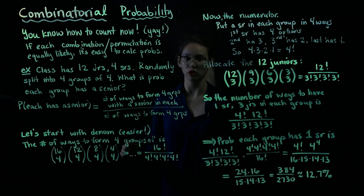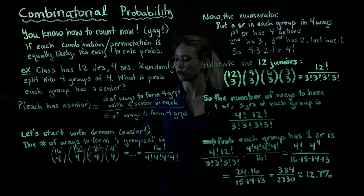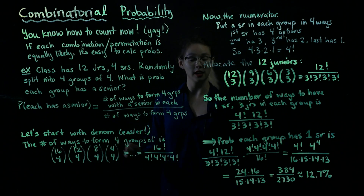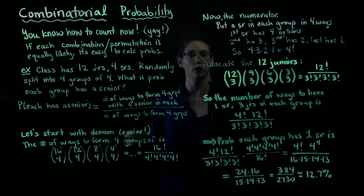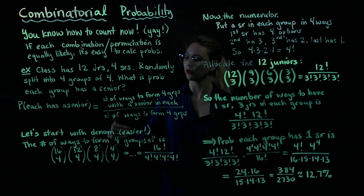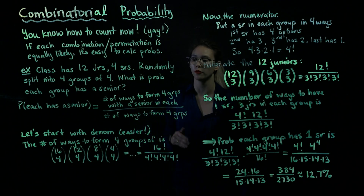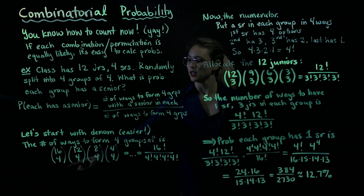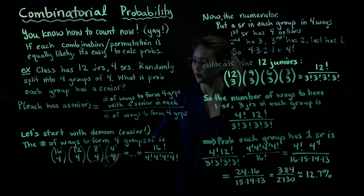When we get to the next group, there are 12 students left and we're choosing four of them, so we have 12 choose four. For the third group, there are eight students remaining and we choose four of them. And then finally in the last group, we have four students remaining and we choose four of them. So the number of ways to form four groups of four is 16C4 × 12C4 × 8C4 × 4C4.